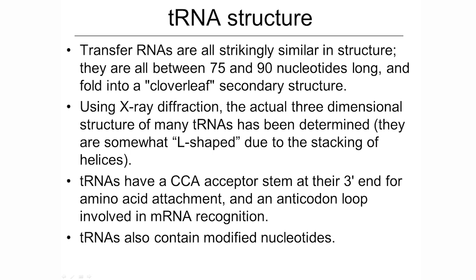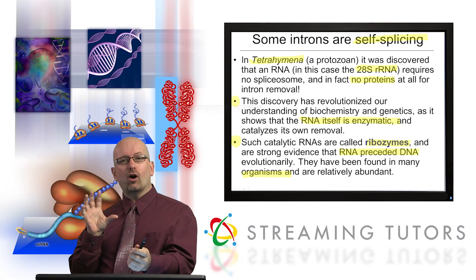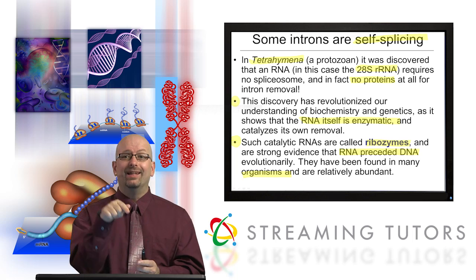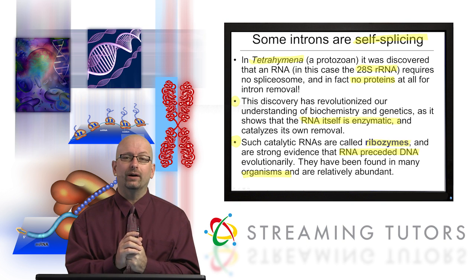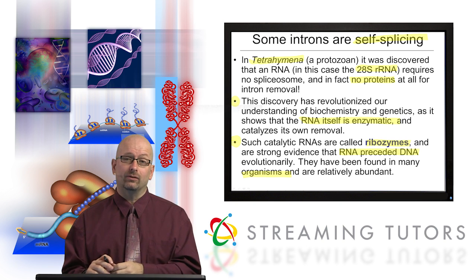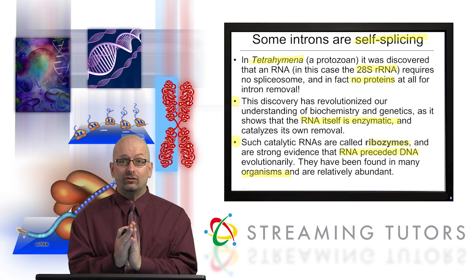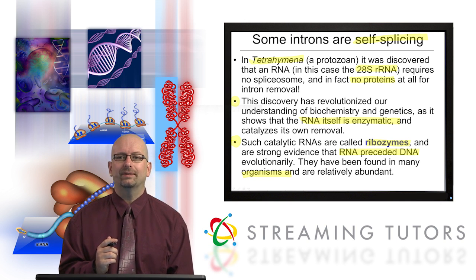The Tetrahymena ribosomal RNA is amazing because it's autocatalytic — it acts on itself. It folds up and the enzymatic actions of it remove the introns, so all you need is the RNA. It makes sense evolutionarily that that would be a lot simpler than needing spliceosomes and all sorts of proteins. Autocatalysis — excellent stuff.